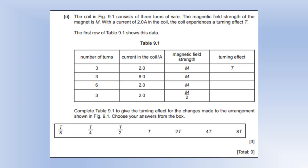The coil in the diagram consists of three turns of wire, the magnetic field strength of the magnet is m and the current is two. That produces a turning effect t. So the key piece of information I'm going to be using in this question is the turning effect is directly proportional to the number of turns, it's directly proportional to the strength of the magnet and it's directly proportional to the current. So if we look at the first line, what we've done is we've multiplied the current by four. All the others have stayed the same, so if current and turning effect are directly proportional, that's going to make four times the turning effect.